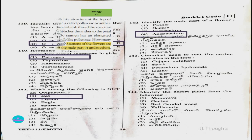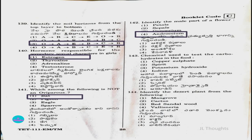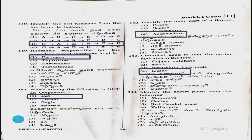Question number 143: Chemicals used to test carbohydrates in food — option 1: copper sulphate; option 2: spirit; option 3: potassium hydroxide; option 4: iodine. The answer is option four, iodine. Question number 144: Identify the desert plant — mangrove, cactus, red sandalwood, or valisneria. The answer is option two, cactus.